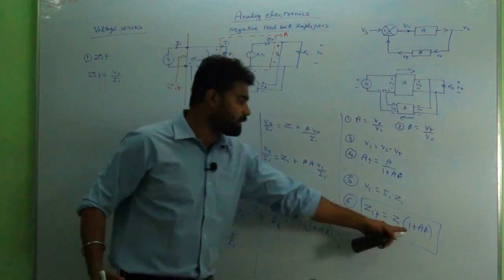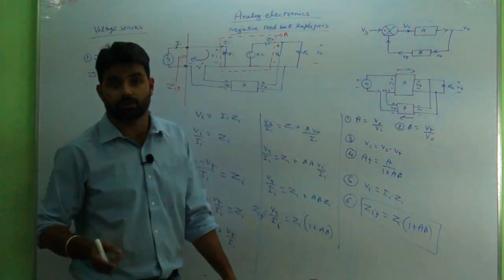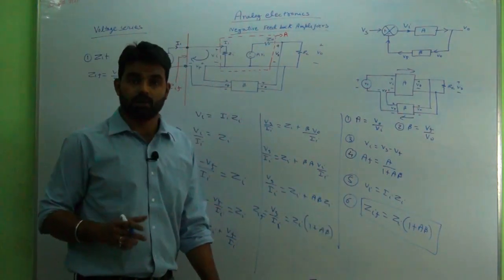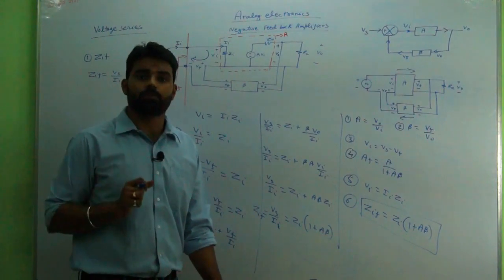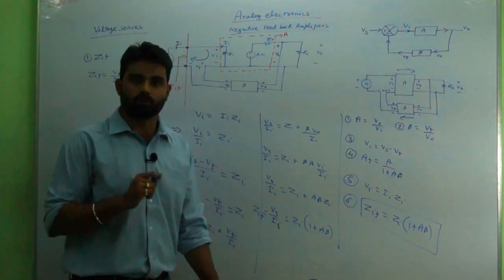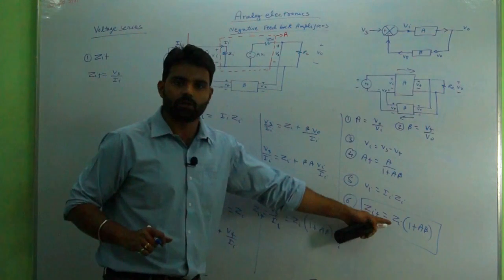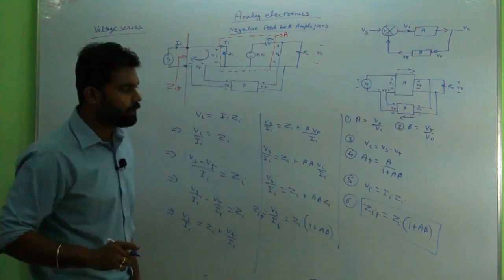Thus we can say that the input impedance with feedback in voltage series negative feedback amplifier increases. ZIF is Zi times a factor, and that factor is obviously greater than unity - it will help to reduce the loading effect, which is a good thing.